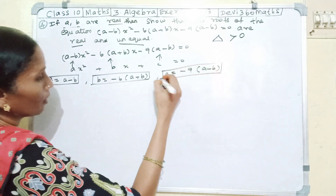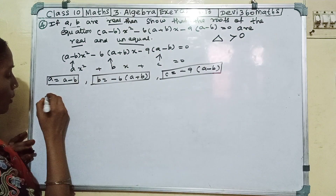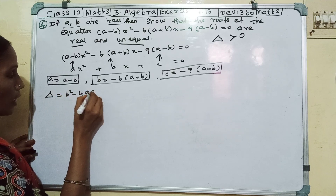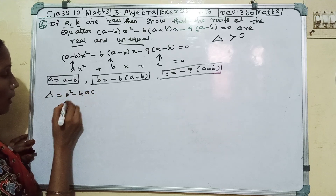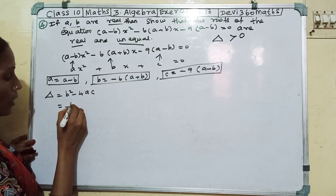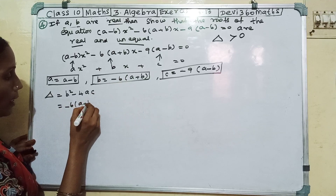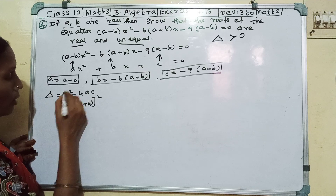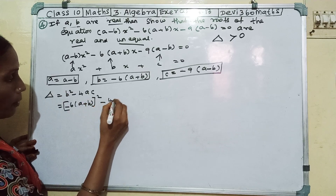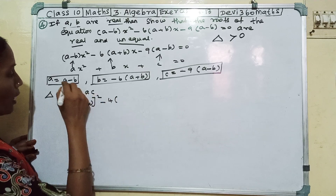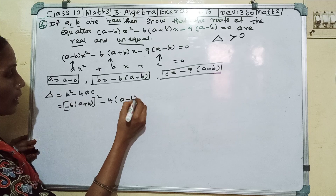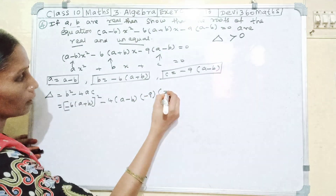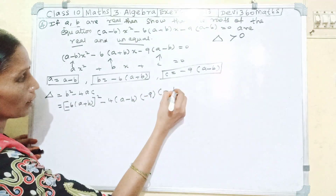Now we will compute delta. Delta equals B squared minus 4AC. B is equal to minus 6(a plus b), A is equal to (a minus b), and C is equal to minus 9(a minus b).